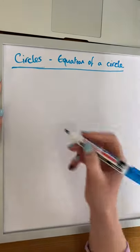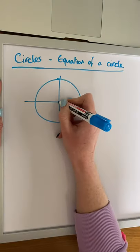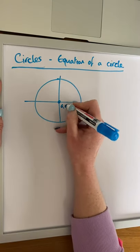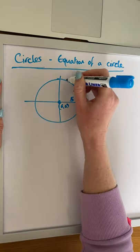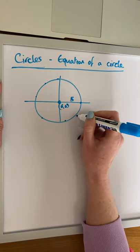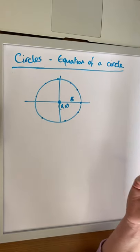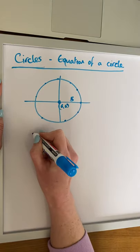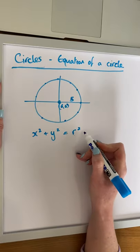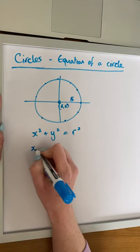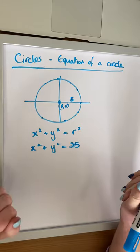A circle is a set of points which is equidistant from a center point. So if we have a circle with a center point on the origin, (0, 0), and a radius of 5, then each point on this circle would be a distance of 5 units away from the center. The general equation of a circle with center (0, 0) is x squared plus y squared equals r squared, where r is the radius. So for this circle, we are looking at x squared plus y squared equals 25.